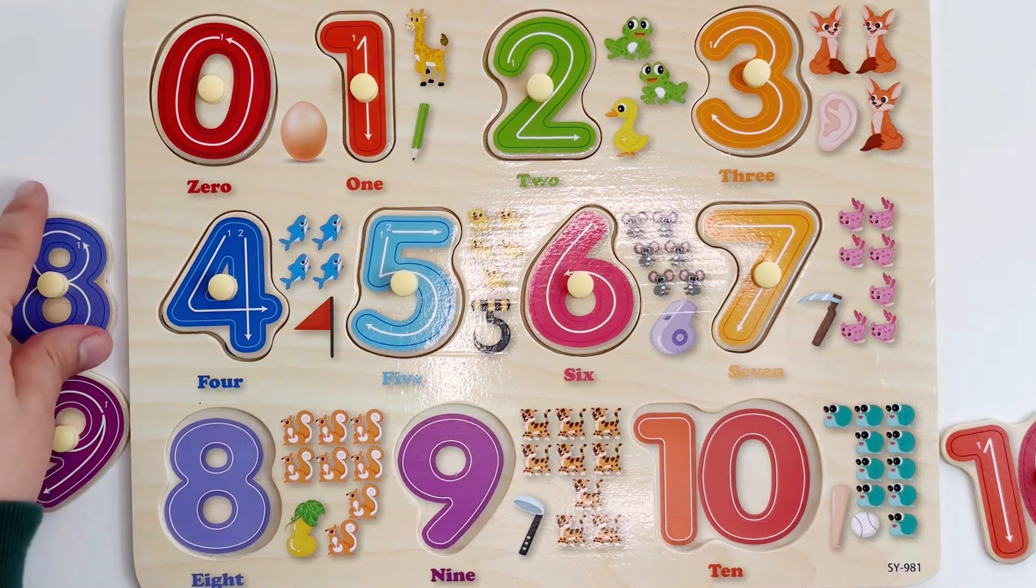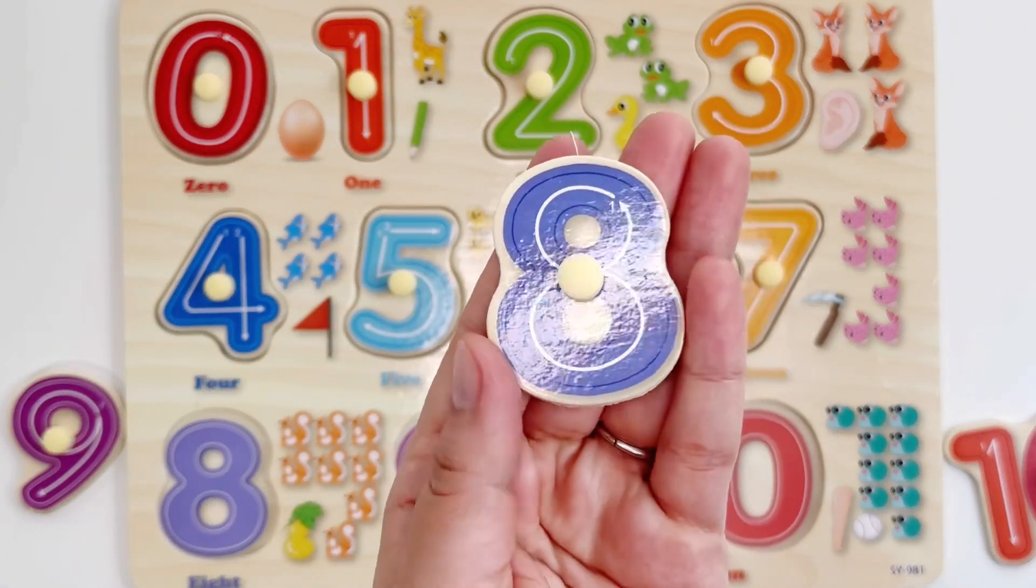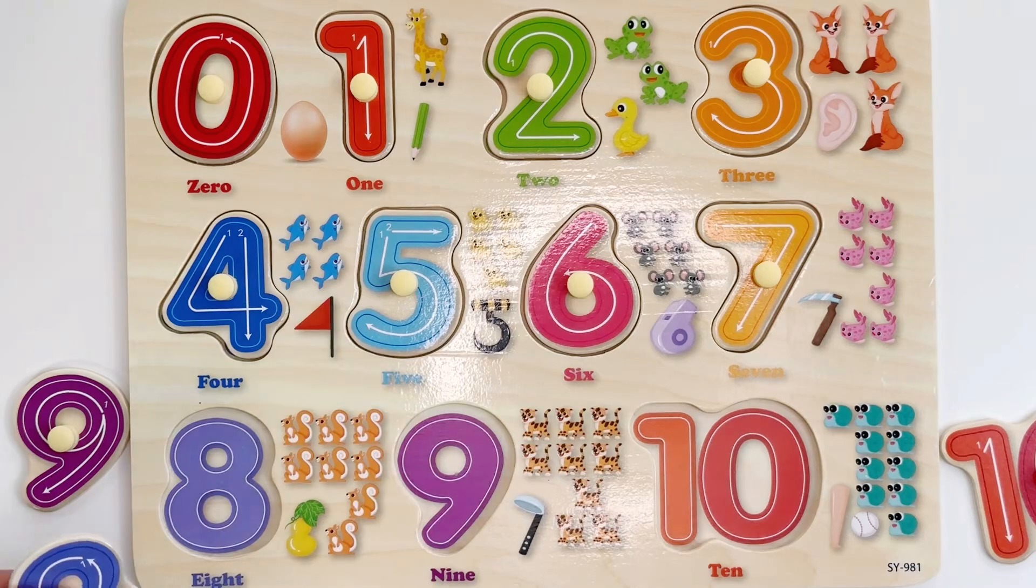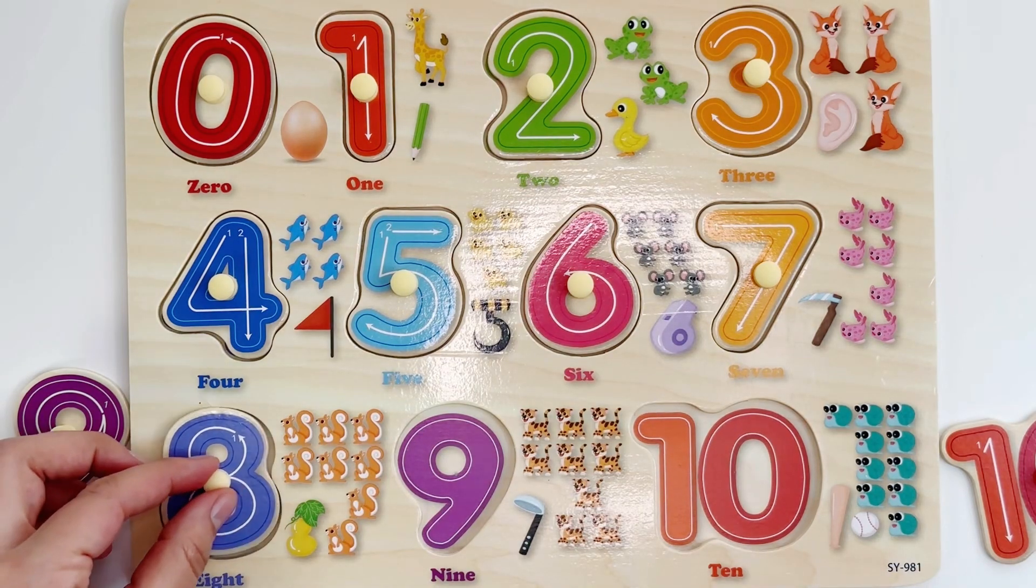Number eight. Eight is the color violet. Let's find the spot for eight. It's right here.